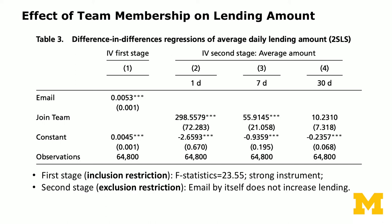In the second stage, we look at the effect of joining teams on lending difference. The one-day effect of joining teams is about $298.56 — roughly $300. The seven-day effect is about $55.9 per day; multiplied by seven, that's about $400. The 30-day window is no longer significant.